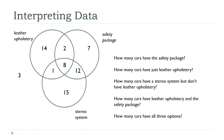What we have here is a Venn diagram that summarizes the cars on the lot at a car dealership based on different packages: some cars have a safety package, some have leather upholstery, some have a stereo system, and some have combinations of the three. How many cars have the safety package? The safety package circle contains 2 plus 7 plus 8 plus 12 — that's 29. So the dealership has 29 cars total that have the safety package.